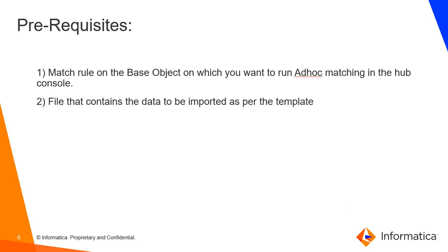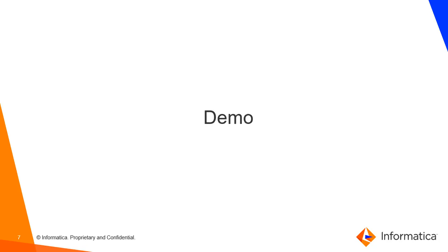So what are the prerequisites to perform ad-hoc matching? We need two things. First is a match rule on the base object on which you want to run ad-hoc matching. We need to set this match rule in the hub console for that particular business entity table. Second is a file that contains the data to be imported as per the template — this should be in .CSV format. In the demo I will show you all the steps on how to perform ad-hoc matching.